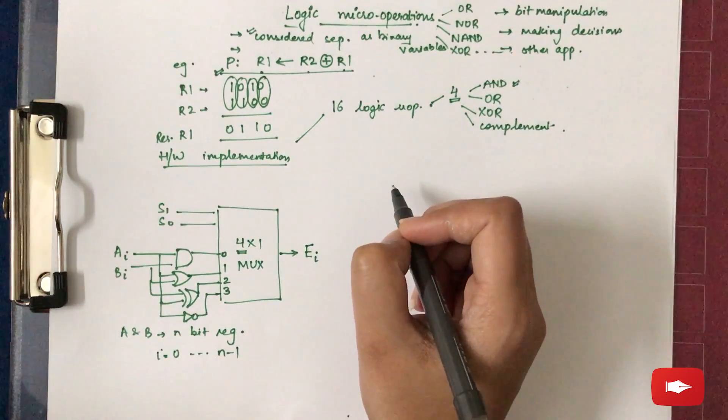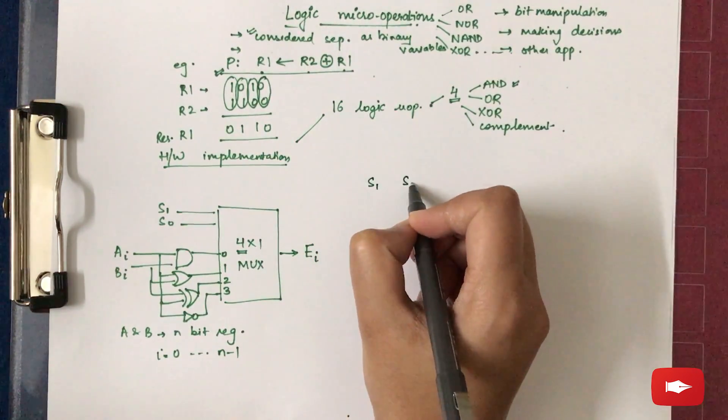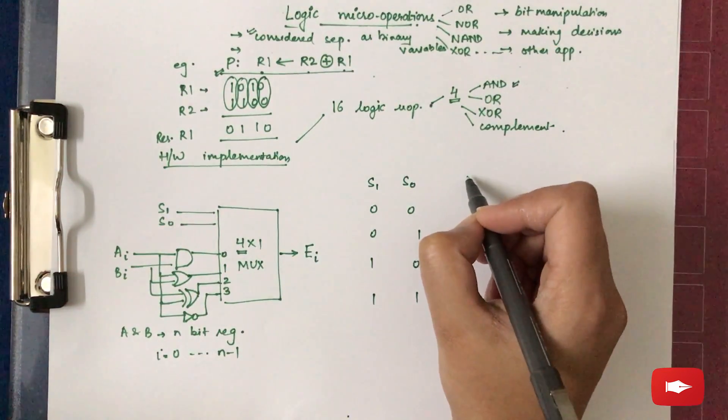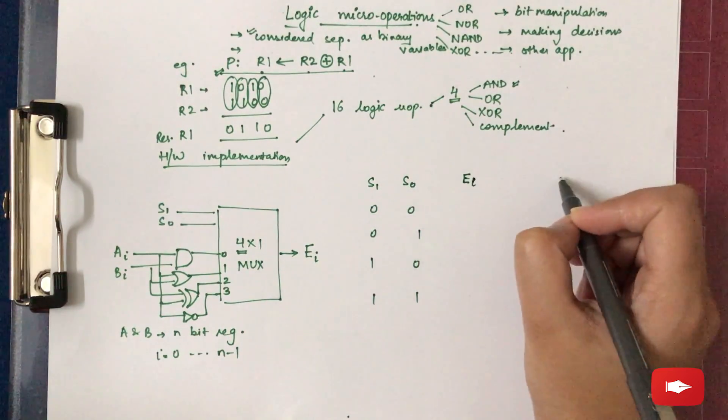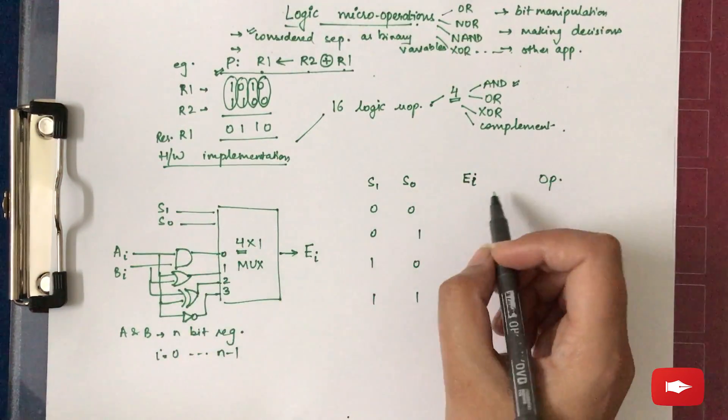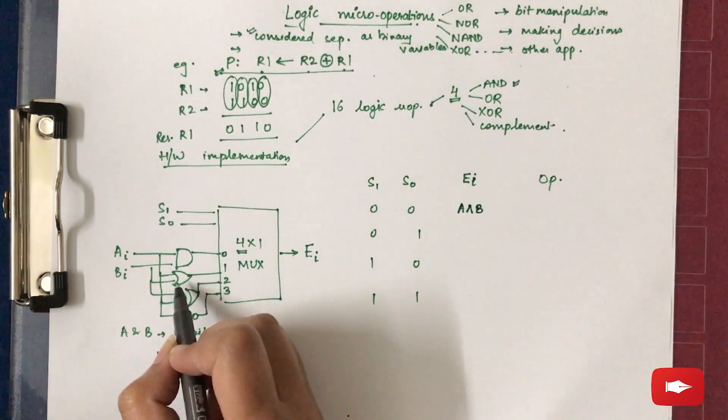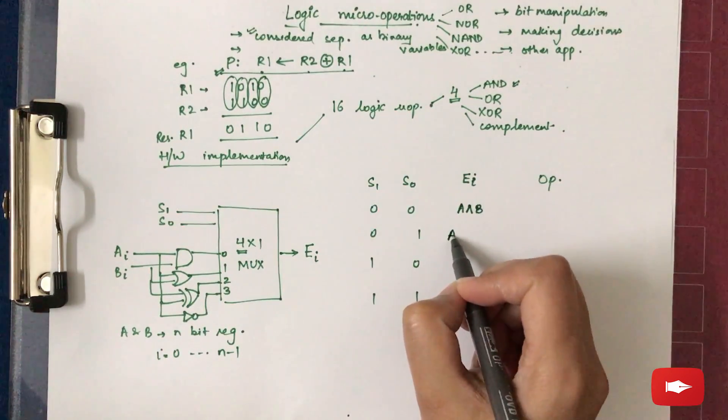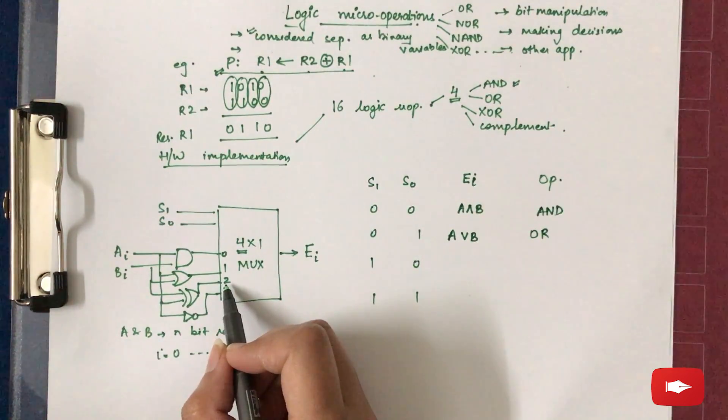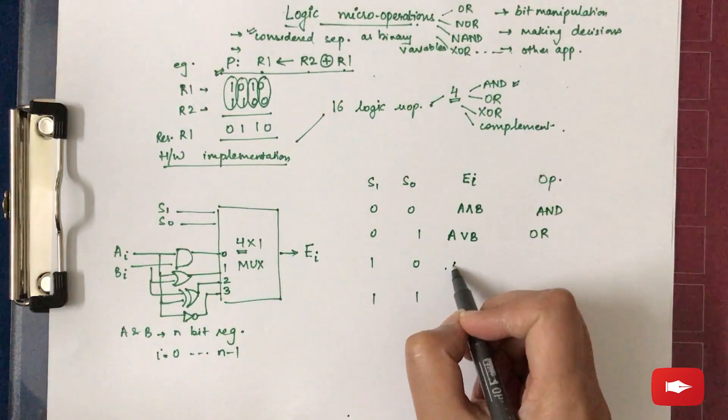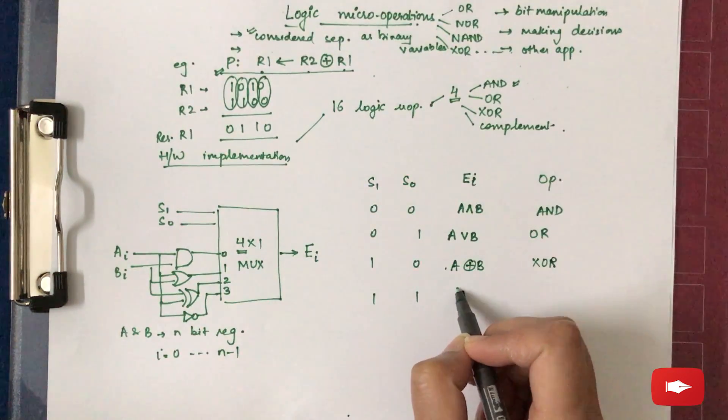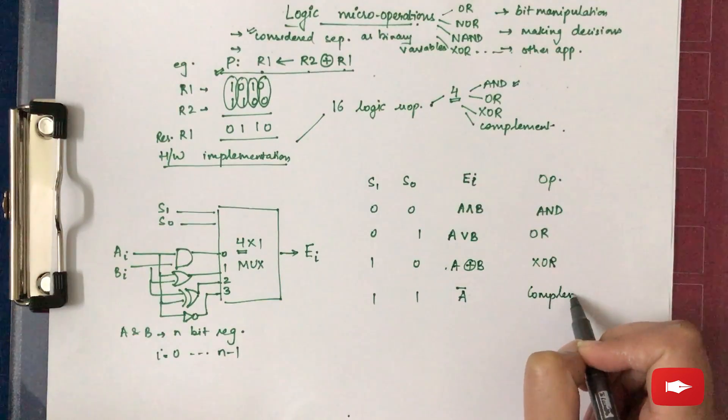We can draw the truth table for this. S1, S0 with 00, 01, 10, and 11. For 00: A AND B. For 01, second we used OR, therefore A OR B. For 10, that is the third input, we said EXOR, therefore it will be represented as A ⊕ B. And last is the complement, that is A complement.